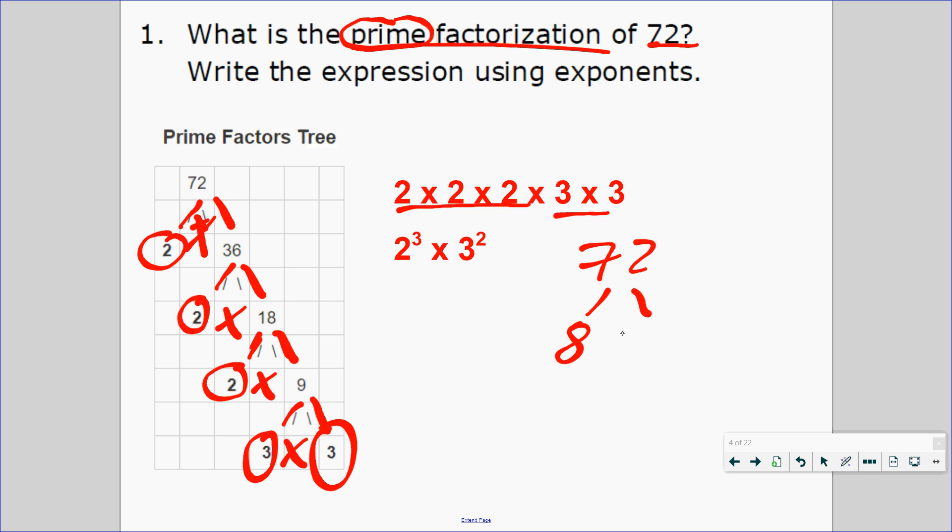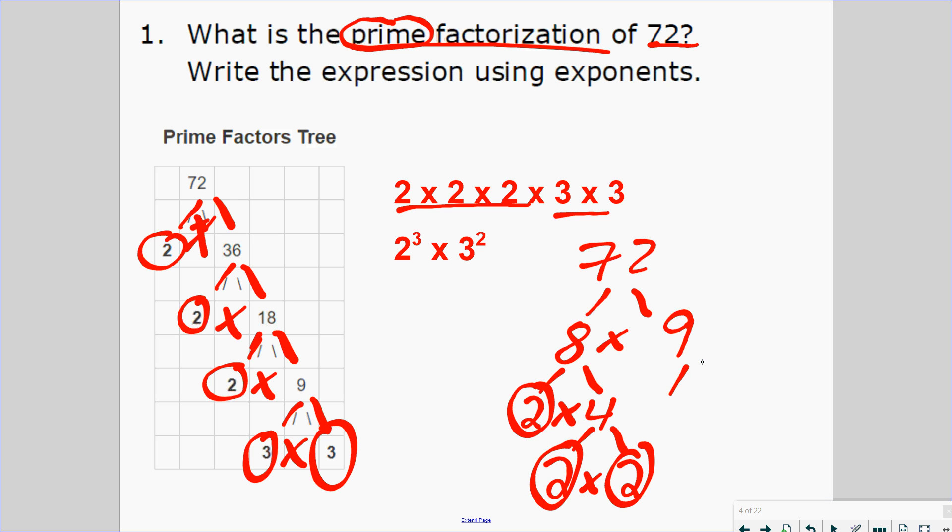I had students do it this way in my class: 8 times 9 is 72. What are the factors of 8? 2 times 4. 2 is prime. What are the factors of 4? 2 times 2. Both of these are prime factors. What about 9? 3 times 3. Both of these are prime factors. So 2 to the power of 3 times 3 to the power of 2.